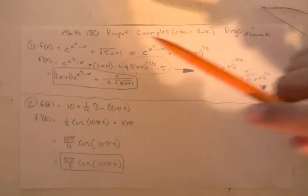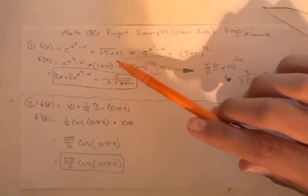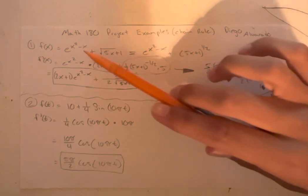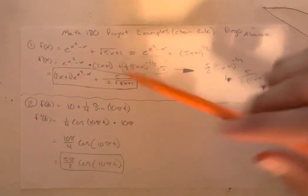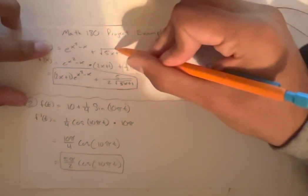So the first example we have is this equation right here, which is e to the x squared minus x plus the square root of 5x plus 1. This actually should be inside the radical.